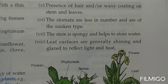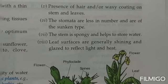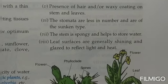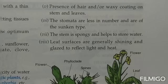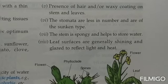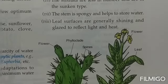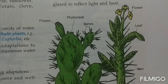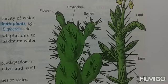The stem is spongy and helps to store water — such plants store a maximum amount of water in their spongy stems. Leaf surfaces are generally shiny and glazed so that they reflect light and heat back, preventing the plant from overheating; when the plant is not heated, it does not waste water to maintain body temperature. Xerophytes are generally found in desert areas where they get very little water and temperature is too high, making all these adaptations essential.